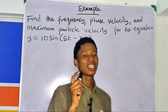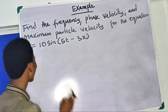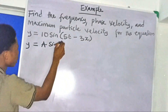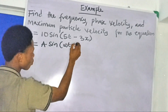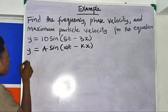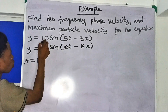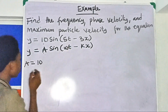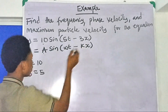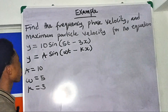The first thing to do when you see an equation like this is to write the general equation: y = A sin(ωt − kx). Comparing with y = 10 sin(5t − 3x), we can identify: amplitude A = 10, angular velocity ω = 5, and constant k = 3. You just compare the two equations to extract your values.